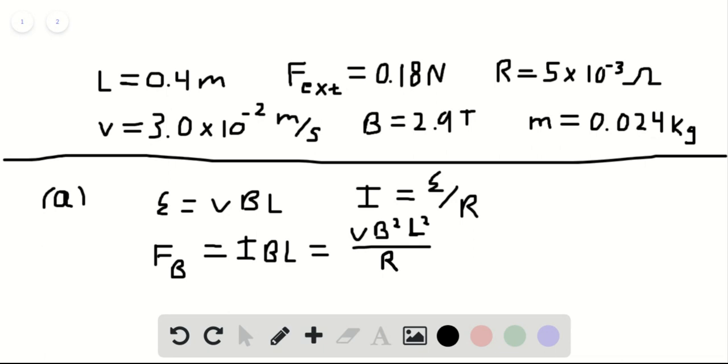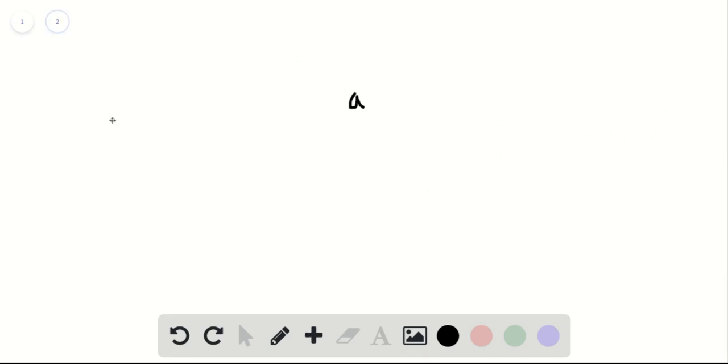Now that we know the force of the magnetic field, we can use Newton's second law here. We're going to have F external, which we were given, minus force of the magnetic field F sub B, which we just found, is equal to mass times acceleration.